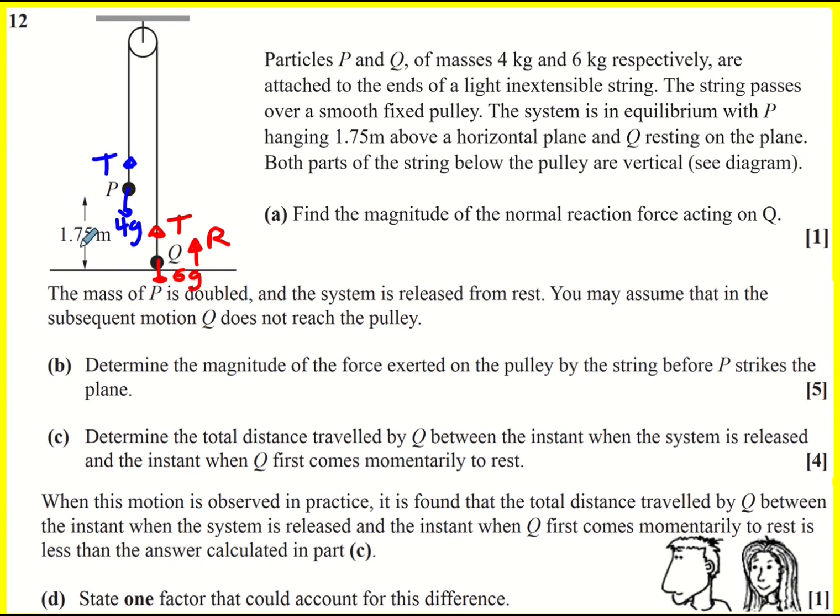This 1.75 meters is there, but in question one, actually, we're not interested in that. We're just trying to find the magnitude of the normal reaction force. We're trying to find R. So it's only one mark. You can do this quite quickly. You can say that T has to equal 4G because it's in equilibrium. Technically, I'm applying F equals MA to P and I'm doing T minus 4G equals zero because acceleration is zero. So T is equal to 4G.